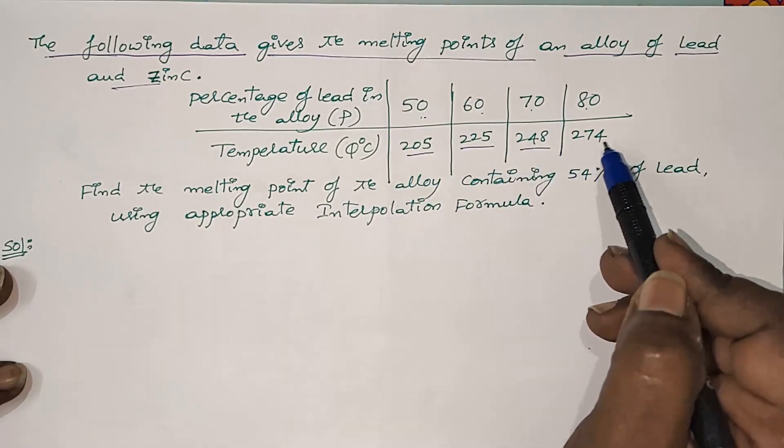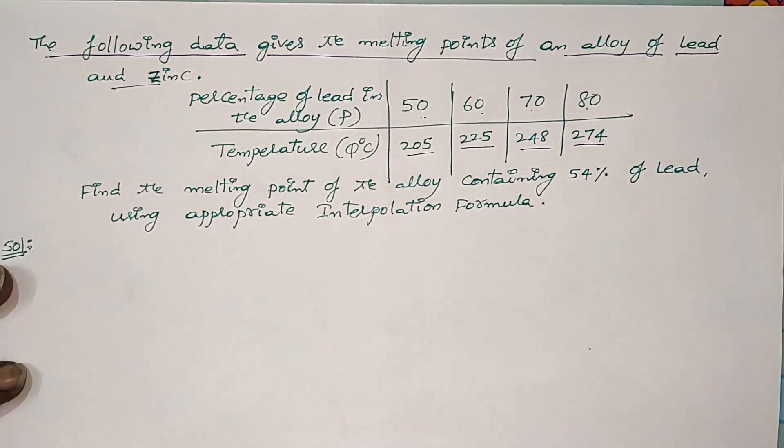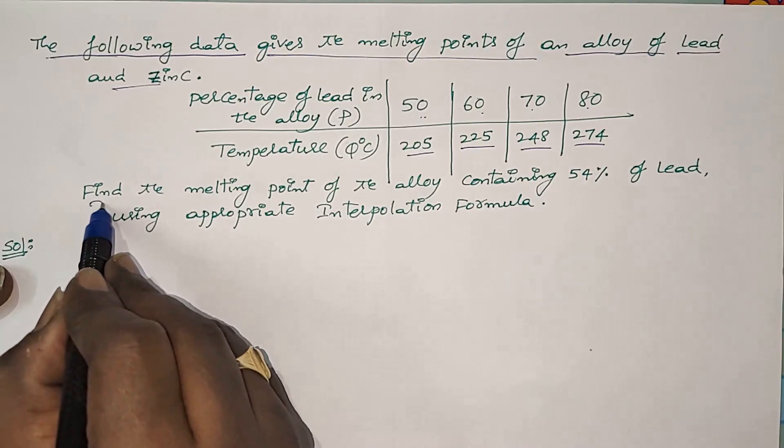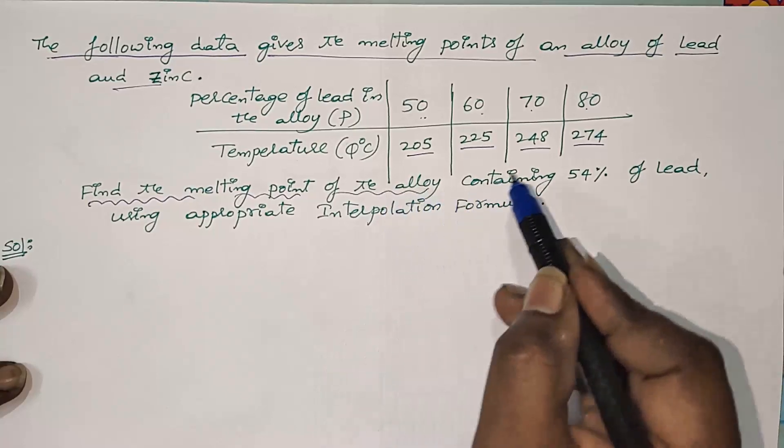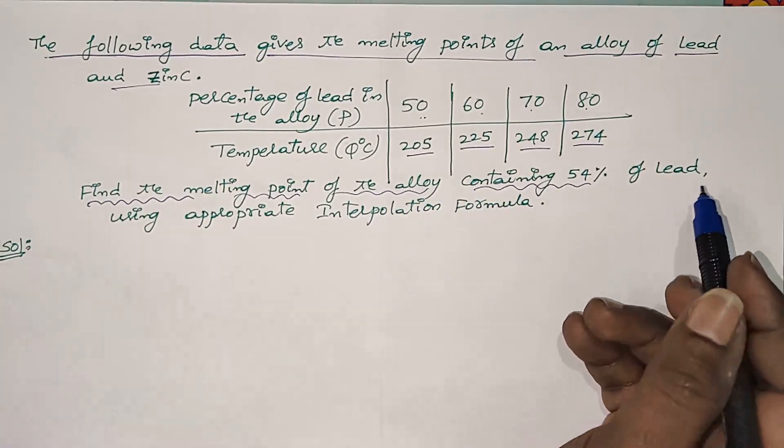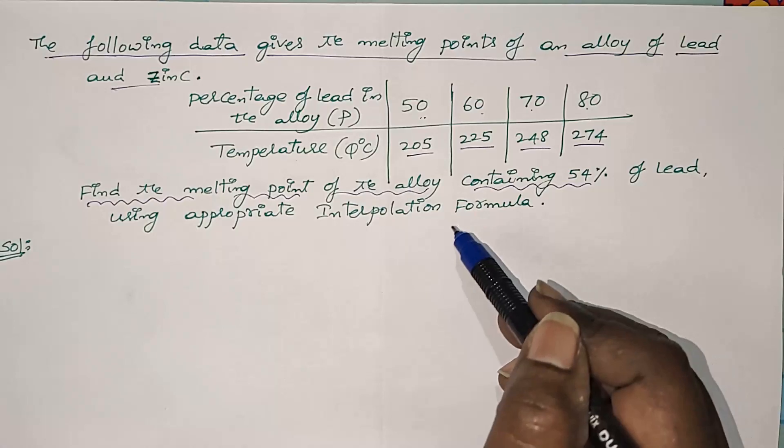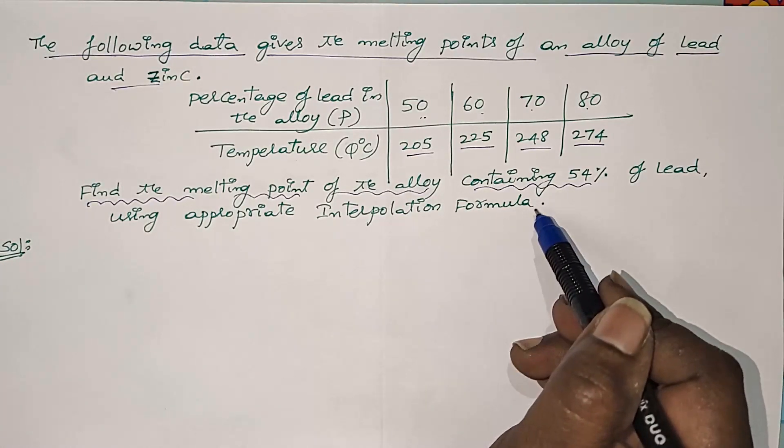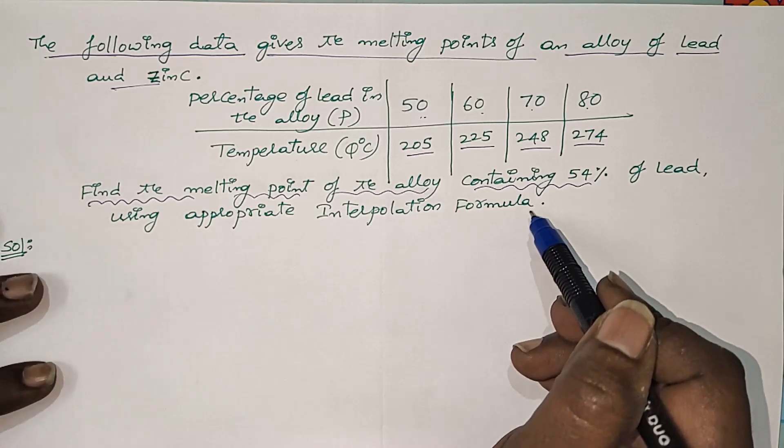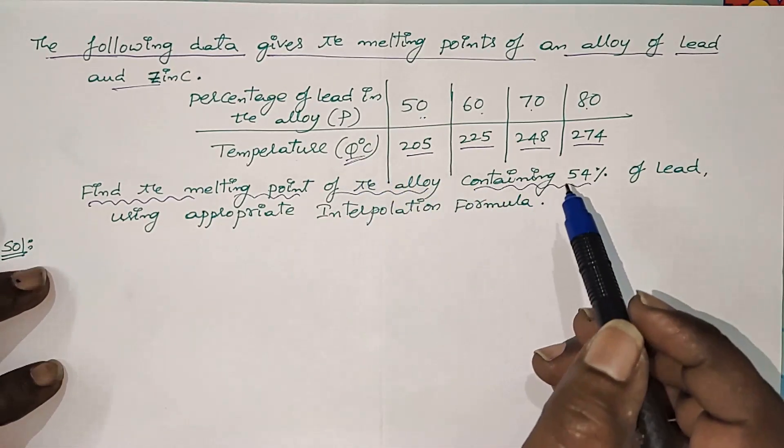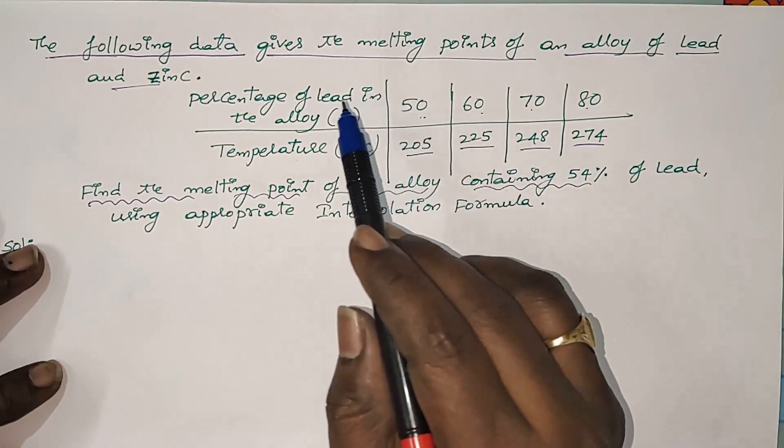Find the melting point of the alloy containing 54 percentage of lead using appropriate interpolation formula. This means you have to find out the temperature for getting the percentage of lead in the alloy as 54 percent.